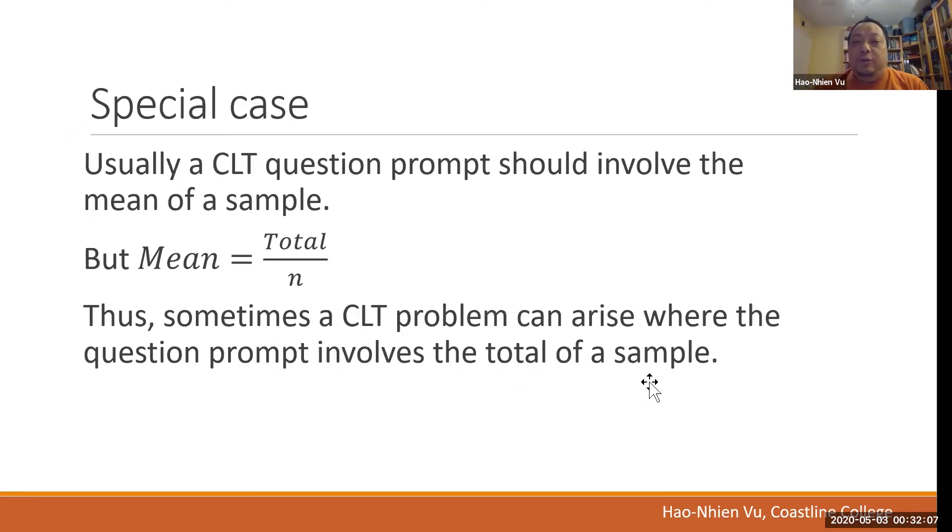Now let me tell you about a special case. This is when the word mean doesn't appear in a problem, but it's still a CLT problem. Because usually the question prompt should include the word mean. But mathematically, mean is equal to total divided by n. So when n is fixed, then total and mean are directly related to each other. And asking about the probability of a total is equivalent to asking about the probability of a mean.